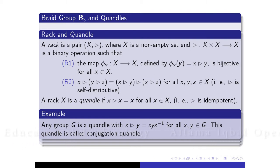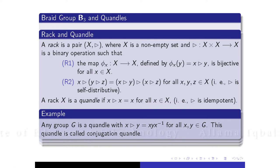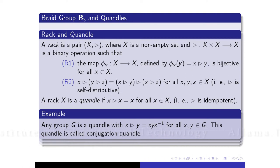Now I will define racks and quandles, as Dr. Nakeeb earlier already discussed much about racks and quandles and their properties. A rack is a pair satisfying two properties. A quandle is a rack that additionally satisfies a third extra property R3. For example, any group with a conjugation relationship will be a quandle, and that group is called a conjugation quandle.